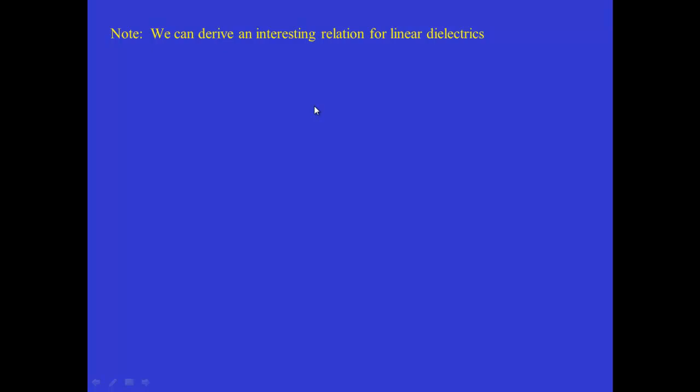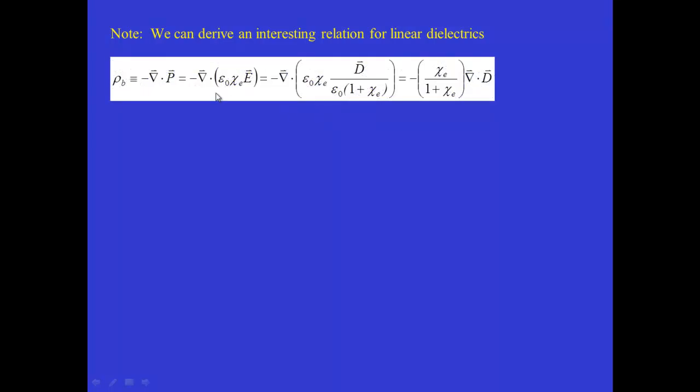Now a couple of notes in closing this section. We can derive a really interesting relationship for linear dielectrics by going back to the definition of the bound charge density as minus the divergence of the polarization field. So now, for a linear dielectric, the polarization field can be written as ε₀χ times E. Then we can write E, as we did a couple of slides ago, as D divided by ε₀(1 + χ). And then collect the terms, we see that the ε₀ cancels. And the χ/(1 + χ), that's clearly a constant, so we can pull that outside of the divergence. And just write -χ/(1 + χ) times the divergence of D.